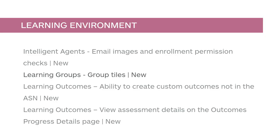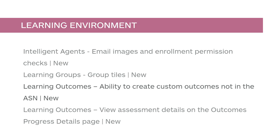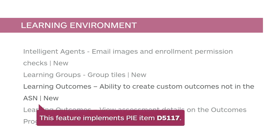Learning groups now display group tiles to provide at-a-glance information about group members and course assignments. Learning outcomes can be created at the org level that are available to all courses, removing the dependency on the Achievement Standards Network. This feature implements PIE Item D5117.